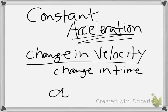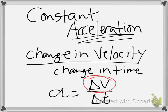So acceleration is equal to change in velocity over change in time. The change in velocity can happen in either direction - it can be an increase, which we call a positive value, or a decrease, which we call a negative value. So acceleration can be positive or negative. Time, on the other hand, can only be positive - change in time is always positive.